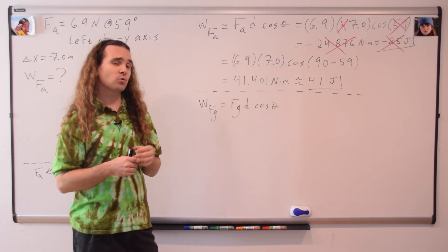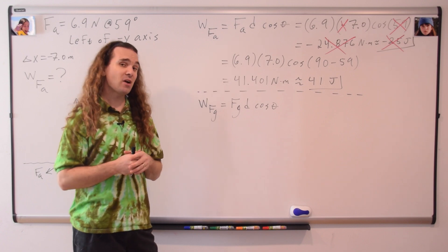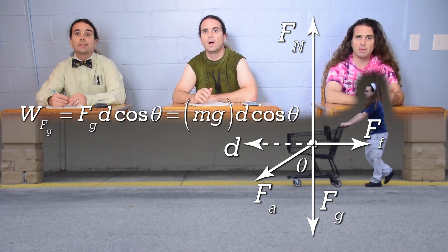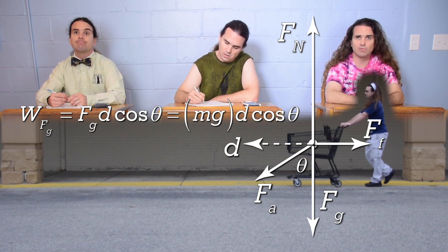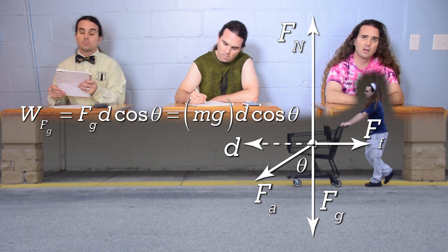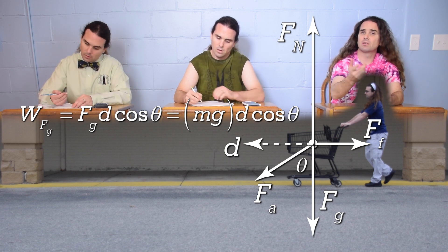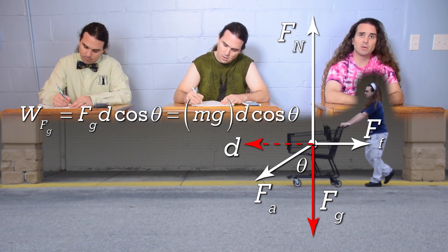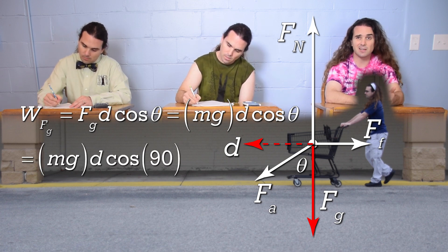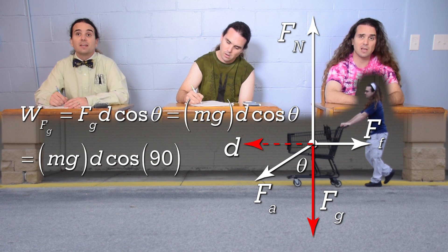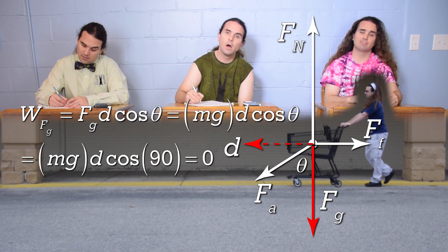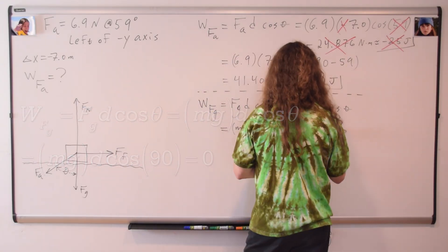Mr. P: We can figure out the work done on the cart by the force of gravity. Bo? Well, we can substitute in mass times the acceleration due to gravity for the force of gravity. However, we don't know the mass of the cart. Oh, but the force of gravity is straight down and the displacement of the cart is to the left, the angle between those two directions is 90 degrees, and the cosine of 90 degrees is zero, so the work done by the force of gravity is zero. Very nice, Bo.